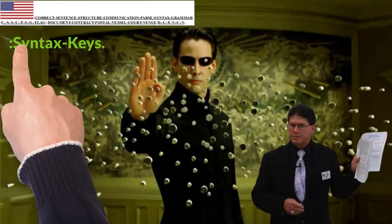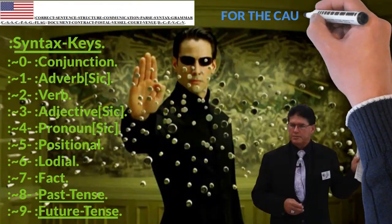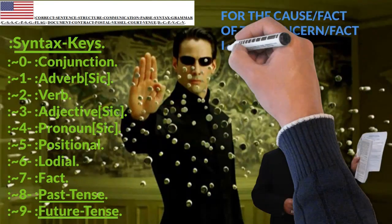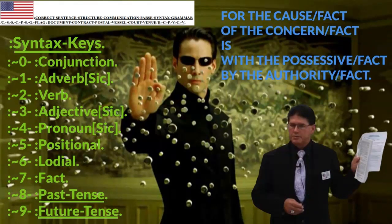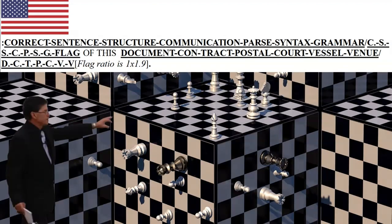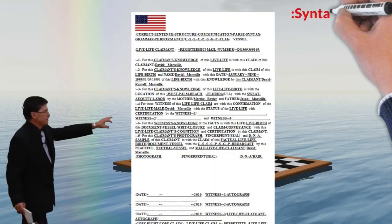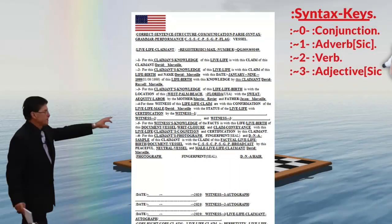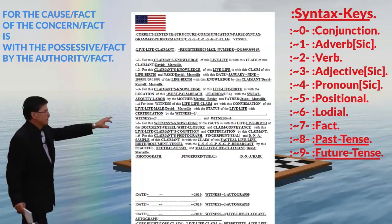Your correct sentence structure, communication, syntax — balance of the order of operations of cause and effect, a verb of thinking, a possessive of with, and an authorization of by the — gives you an order of operations for every sentence that follows the rules of the operations of court. So every single sentence is its own independent court as you make an argument. Your paperwork is going to speak for you. You don't lose any words.